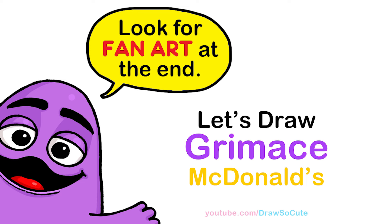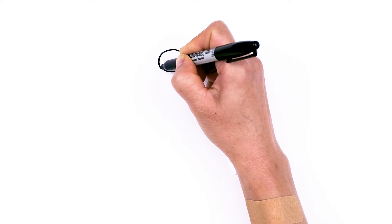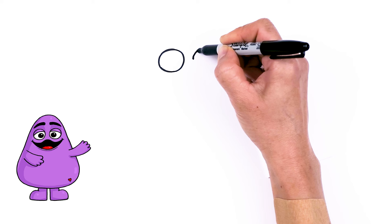To draw cute Grimace, let's first start by drawing his eyes. So I'm going to come right here and draw a big circle. Then come right next to it, say about this wide, and draw another circle. So the eyes are pretty close together.